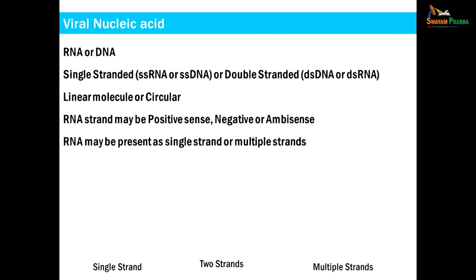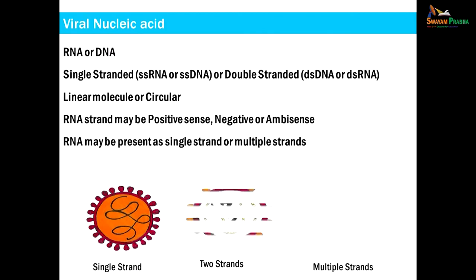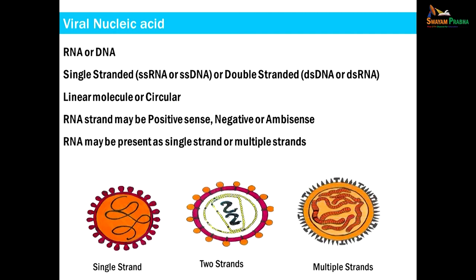The nucleic acid of a virus is either DNA or RNA. It can be either single-stranded — single-stranded RNA or single-stranded DNA — or double-stranded — double-stranded DNA or double-stranded RNA. The nucleic acid molecule can appear as a linear or circular molecule. In case of RNA viruses, the RNA strand may be positive sense, negative sense, or ambisense. RNA viruses may have a single strand, two strands, or multiple strands of RNA molecules.